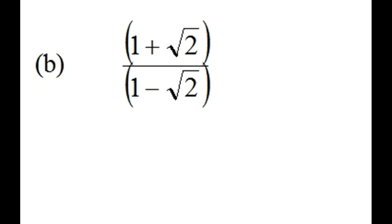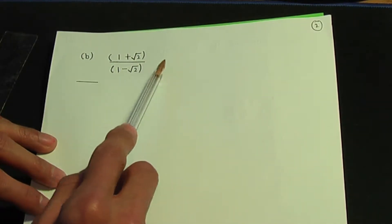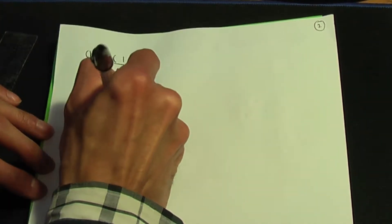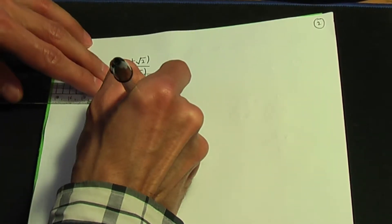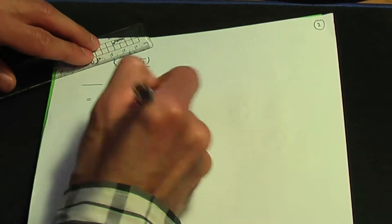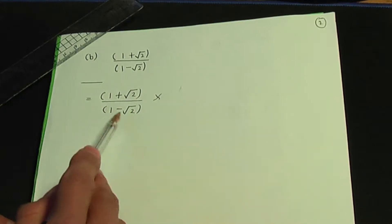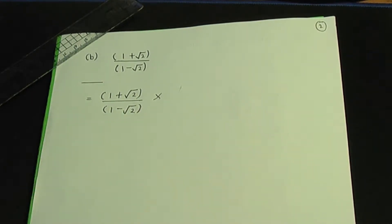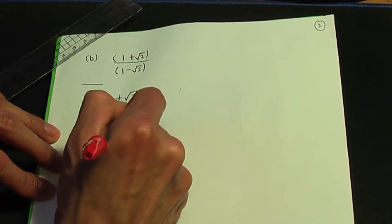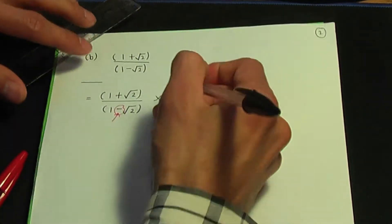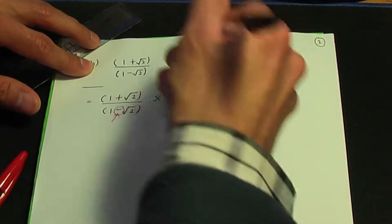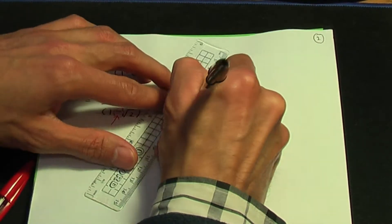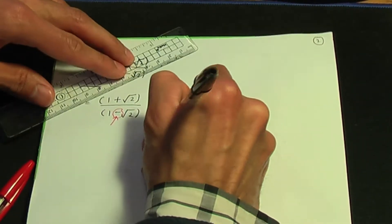Back to the screenshots. So here is part B: rationalise one plus root two over one minus root two. The idea here is you multiply the top and the bottom by a similar term to the denominator — similar because we only reverse the sign in the middle. So we reverse the sign in the middle and multiply both top and bottom by that term, giving us one plus root two.